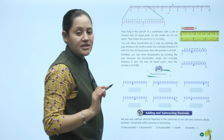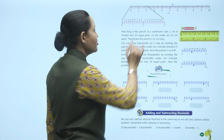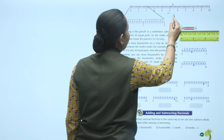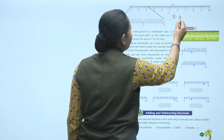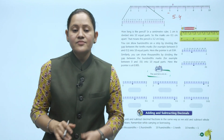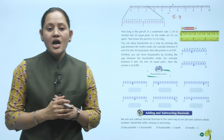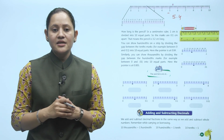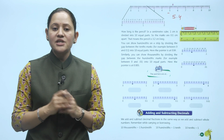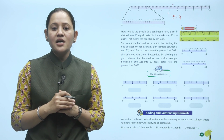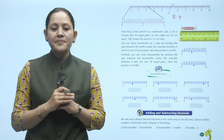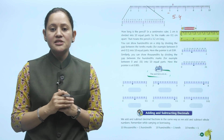Each part represents 1 by 10. The 4th mark represents 4 by 10, which is 0.4. So 5 plus 0.4 equals 5.4. On a centimeter ruler, 1 centimeter is divided into 10 equal parts, so marks are 0.1 cm apart. If the pencil ends at the 2nd mark after 3, the pencil is 3.2 centimeters long.